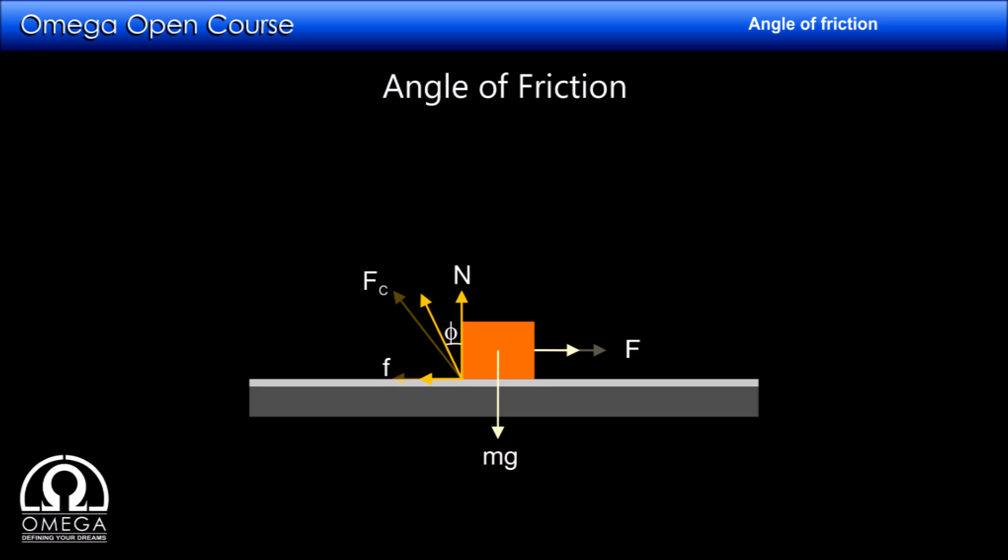If we keep on increasing the external force, the friction keeps on increasing. But the static friction has a maximum limit to it, after which the block starts sliding. When the block is on the verge of slipping...